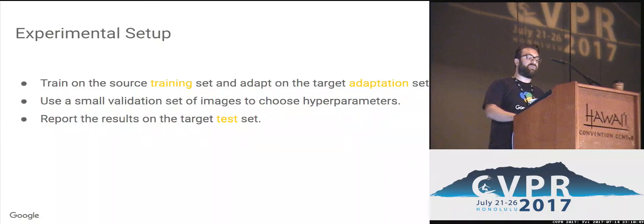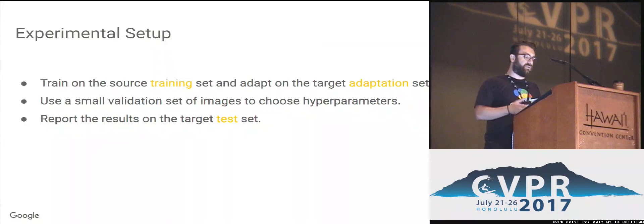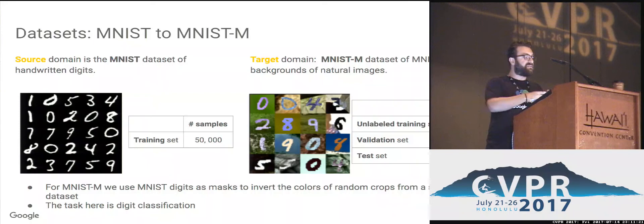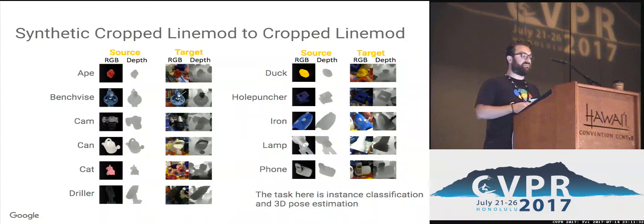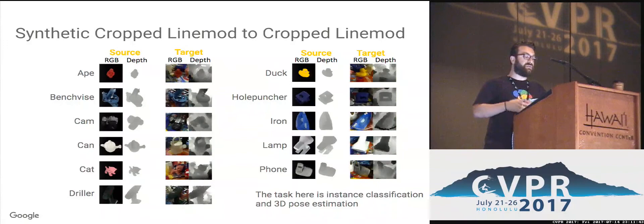For our experimental setup, we always train on the source training set and adapt on the target adaptation set. We use a small validation set of target images to choose optimal hyperparameters and report results on the target test set. We evaluate on a variety of domain adaptation scenarios. One scenario is adaptation of MNIST digits to MNIST-M digits, where MNIST digits are used as binary masks to invert the colors of random crops from a scenes dataset — the task being digit classification. The most challenging scenario is adapting synthetic to real cropped linemode samples, where the task is instance classification and 3D pose estimation across 11 objects in various poses.